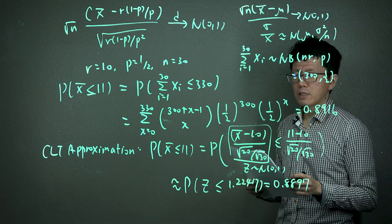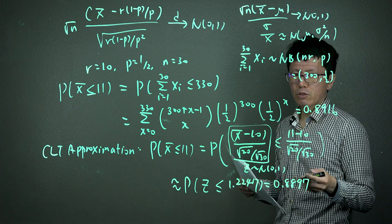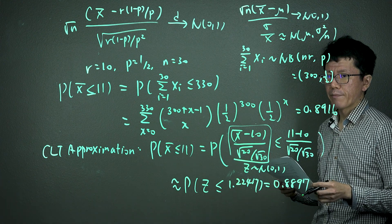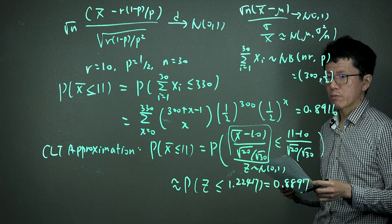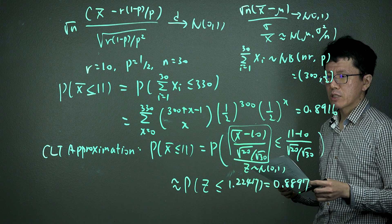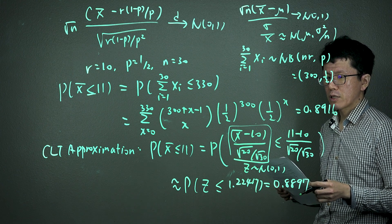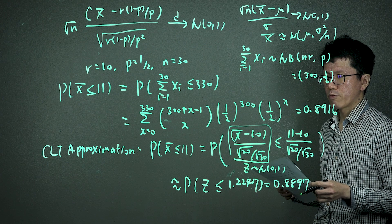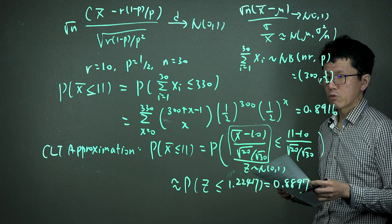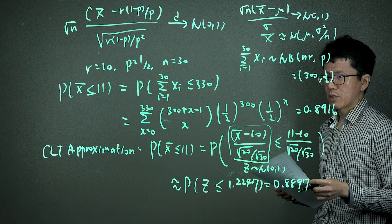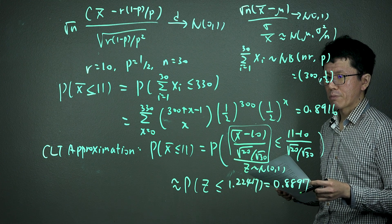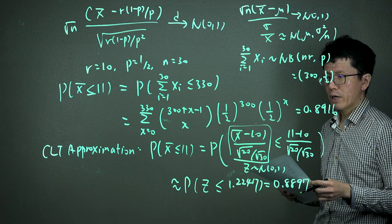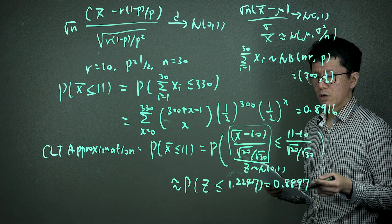The CLT approximation in this case is quite good compared to the original probability calculation of 0.8916. However, this is not always the best. If your sample size is small and you use the CLT approximation, the result may not be good and may be far from the original probability calculation. Keep in mind that CLT approximation is good for large sample sizes, but may not be good for small sample sizes.